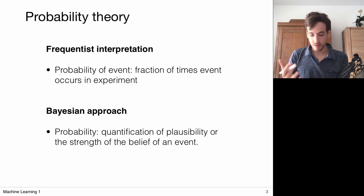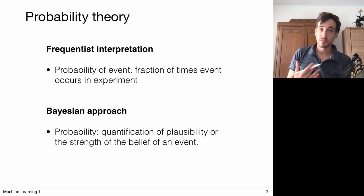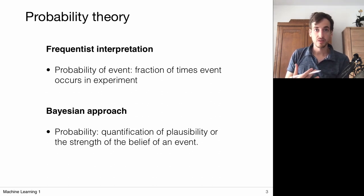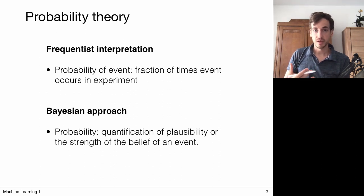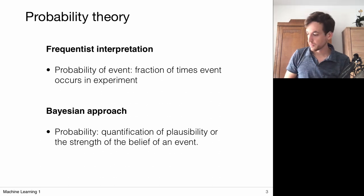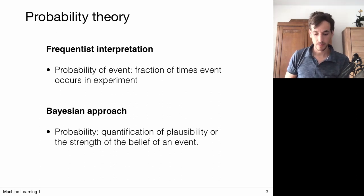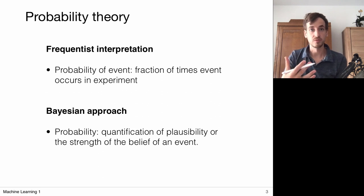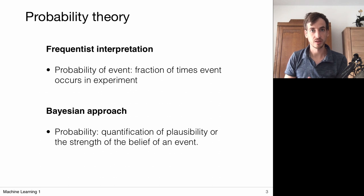The Bayesian approach plays a very central role in this course. If you go to the Book of Bishop, you will notice it takes a heavy Bayesian viewpoint on machine learning, which is nice because it provides a way of dealing with uncertainty, including for events you have never encountered before.